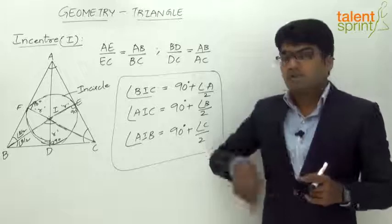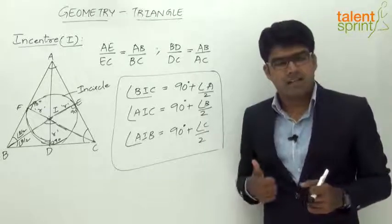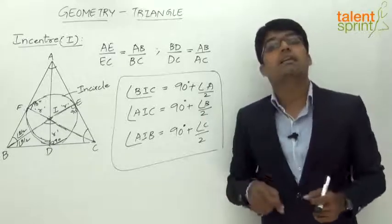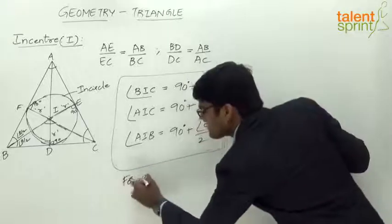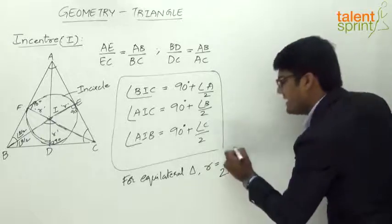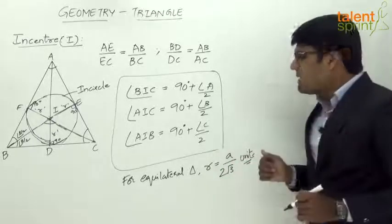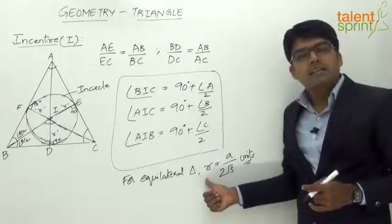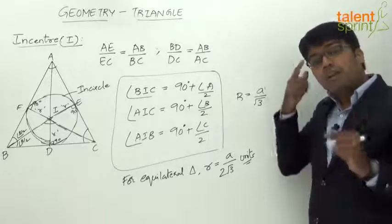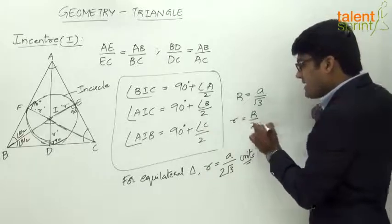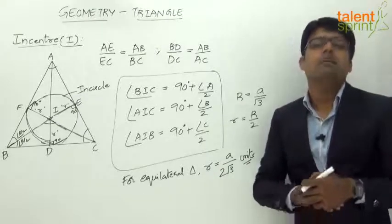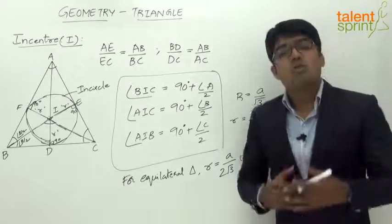For an equilateral triangle, the circumradius R equals a/√3. The inradius for an equilateral triangle equals a/(2√3), where a is the side length. This is because for an equilateral triangle, the inradius r equals circumradius R divided by 2. So a/√3 divided by 2 gives a/(2√3). This is an important formula to remember.